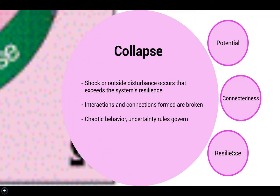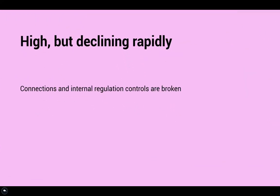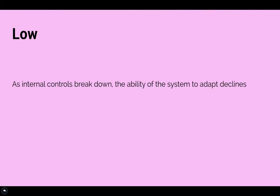The release or omega phase is also known as the collapse phase. This is when the system undergoes a shock or disturbance that exceeds its resilience levels — due to this, all the connections formed in the conservation phase are severed and chaos reigns in the system. During the omega phase, the potential of the system declines dramatically as resources are abruptly lost or exhausted, destroying future possibility of use. The connectedness level was high at the beginning of this phase, but as the shock or disturbance progresses, those connections are destroyed. As a result, the resilience of the system is also low as its overall adaptability lowers dramatically.